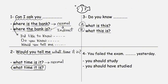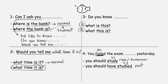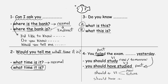You failed the exam blank yesterday — 'you should study yesterday' or 'you should have studied yesterday'? Here, 'should' is followed by the base verb (verb 1), and 'should have studied' uses the past participle (verb 3). We use the first one to give advice in the present or future: 'you should study now' or 'you should study tomorrow.' The second one, 'should have studied,' is used for past advice — something you had to do in the past. Since 'failed' is past and we have 'yesterday,' the correct answer is 'you should have studied yesterday.'